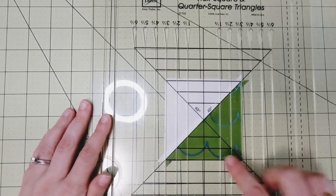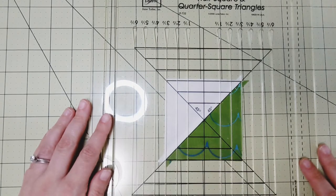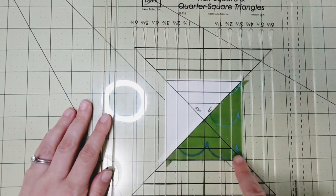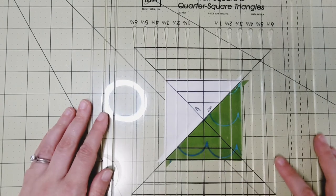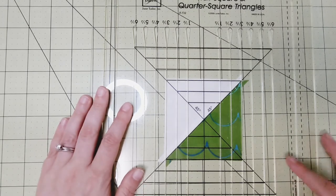Line up the diagonal right where the two fabrics meet here in the middle, and then the next thing you want to do is make sure that all four corners of your HST are covered by fabric. So this one's cutting it pretty close, but it looks like I got them all covered.